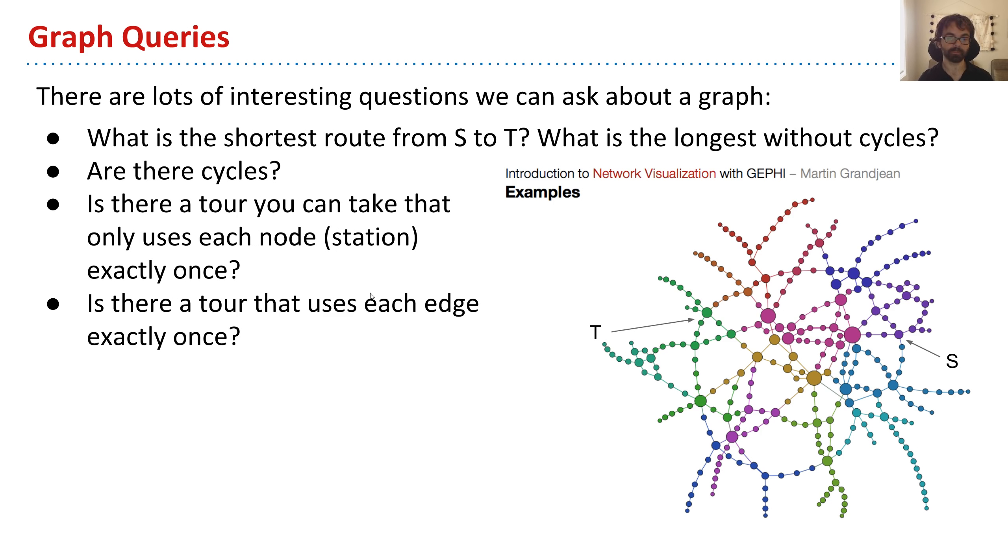However, for other generic graphs, maybe that's not the case. Maybe there are other systems like BART. Are these questions different? You might think about all these questions in the context of BART or other things that aren't even subway maps.